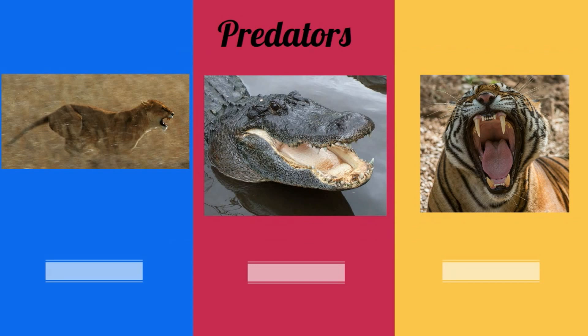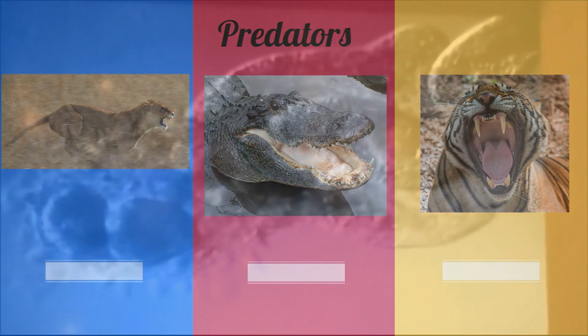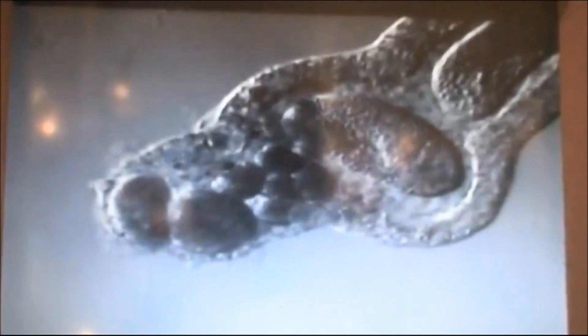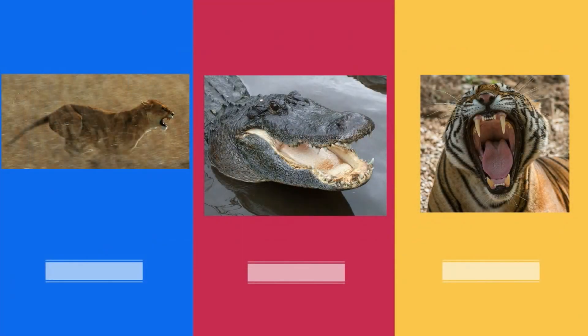In a predator and prey interaction, take a look at this amoeba, who is the predator consuming a paramecium, which is the prey. Watch this praying mantis attack its prey.